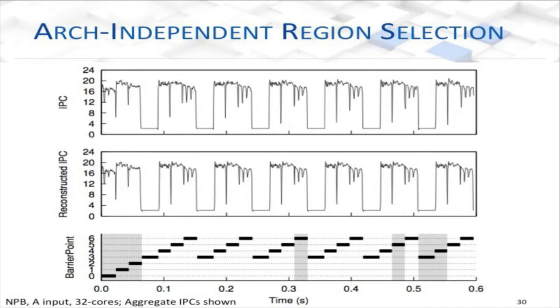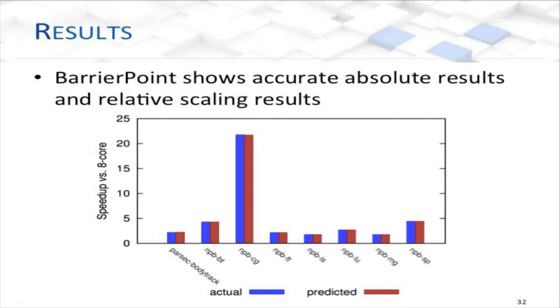This results graph shows a good case study: if you're trying to understand whether to put more cores or more cache on your processor, you might look at something like this. We're comparing the speedup of an eight-core versus a 32-core machine. Interestingly, we're only increasing the number of cores by four, but CG has a performance increase of 20x over the original application. Why? CG becomes cache-fitting once you go to 32 cores, and then you can see significant performance improvements. This is the kind of case study these sampling techniques enable.